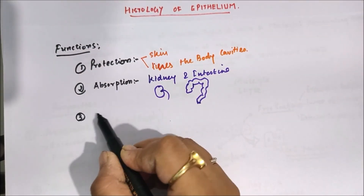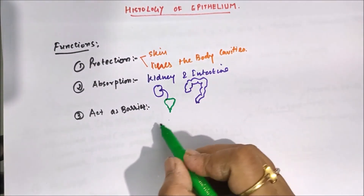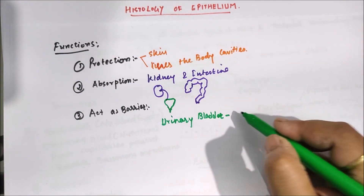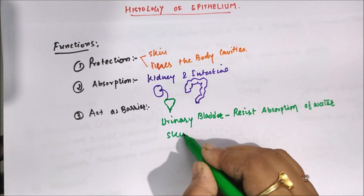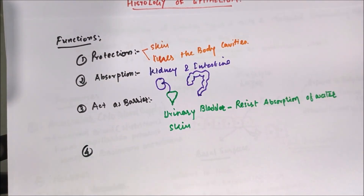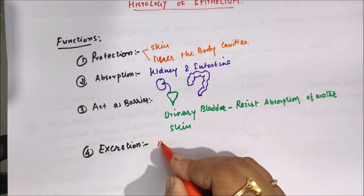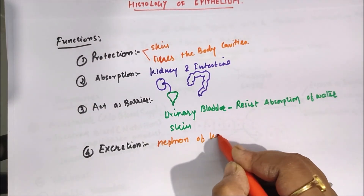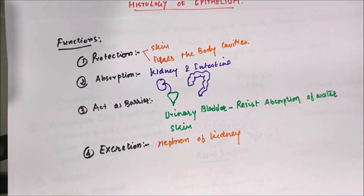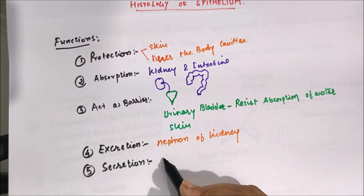The next function is that it acts as a barrier. For example, the urinary bladder resists the absorption of water. The skin also acts as a barrier to the external environment. Another function is excretion — the epithelium of some portions of the nephron of the kidney is involved in the excretion of waste products. Another function is secretion — some epithelium may also act as secretory, for example in the intestine.